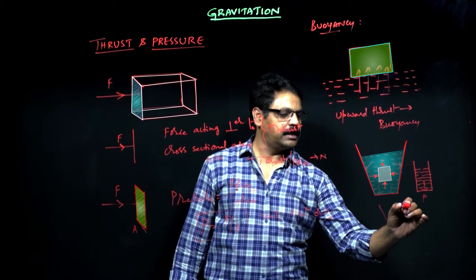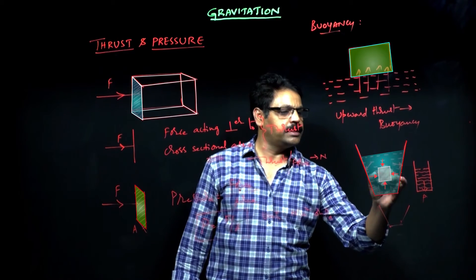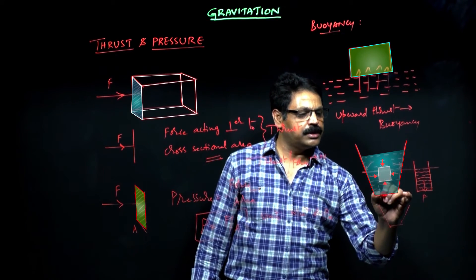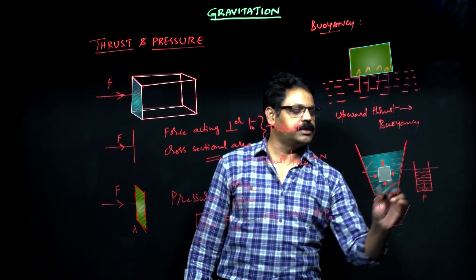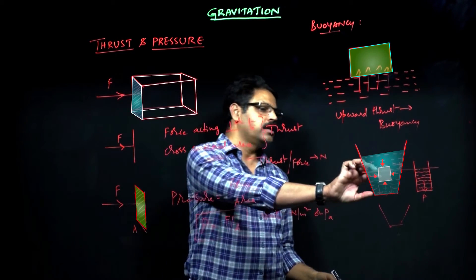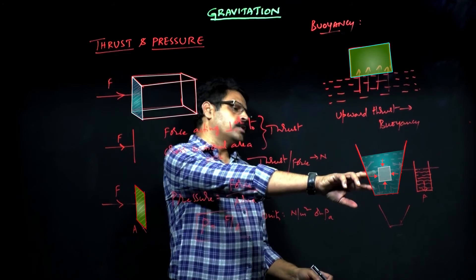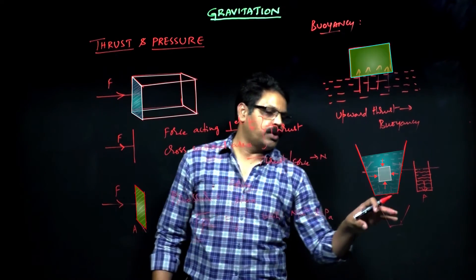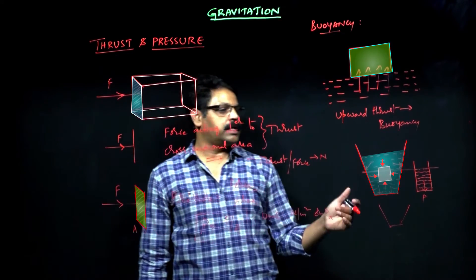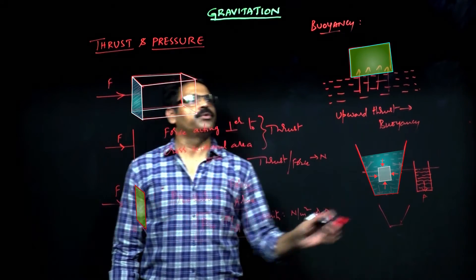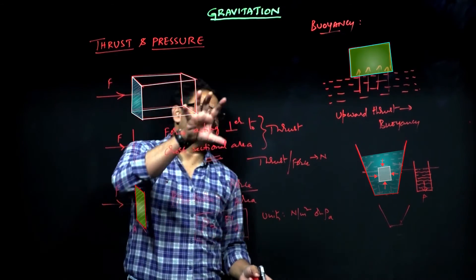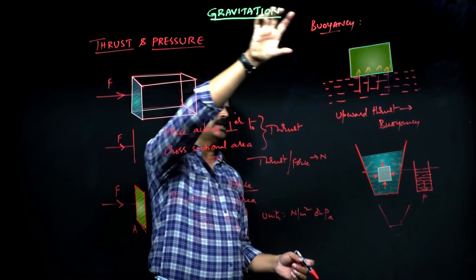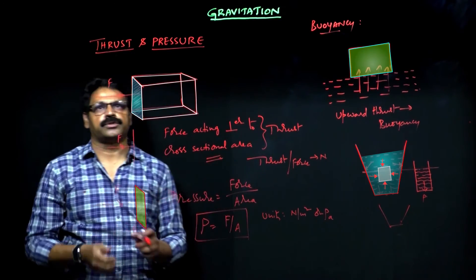If you take containers to the same level, the pressure due to each will be the same — it depends only on the height. So, the pressure exerted by the fluid on a body is the same in all directions, which is called fluid pressure. Three things we can conclude here: the definition of thrust, the definition of pressure, and what is meant by buoyant force.